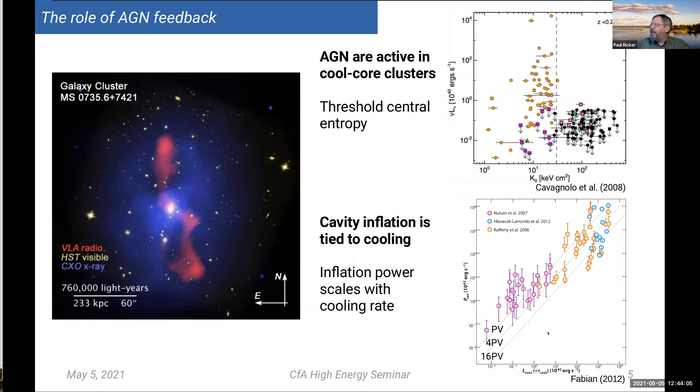In these cool core clusters where we expect cooling to be occurring, the AGN are simultaneously producing heat. Moreover, the amount of heat they produce is sufficient to offset the cooling and is tuned as needed. The power needed to inflate cavities based on mechanical work scales well against the rate of cooling due to X-ray emission, though there is scatter corresponding to a range of different values in the efficiency of cavity inflation.